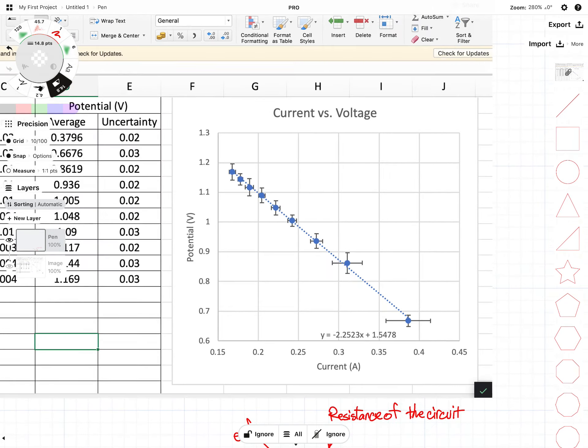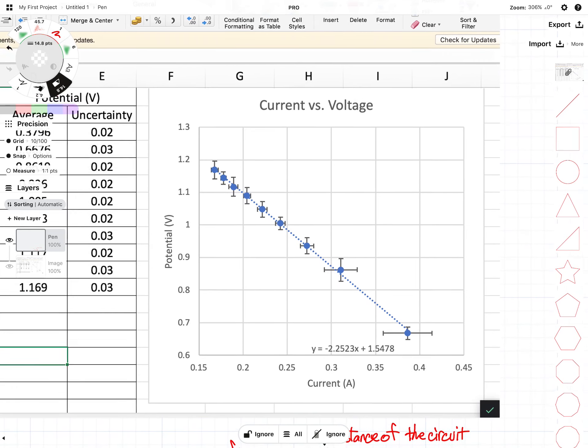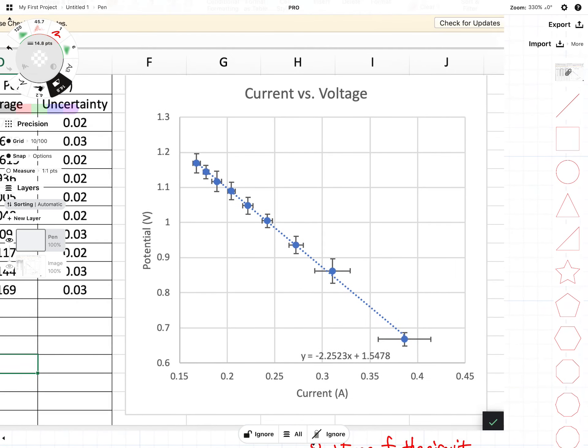Anyway, moving on. We have here our current versus voltage chart, and you can see I've formatted the axes and everything is looking pretty good. Looks like I still have a little bit of work to do on the axes formatting.